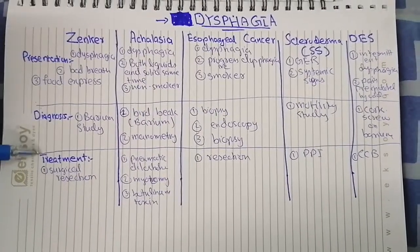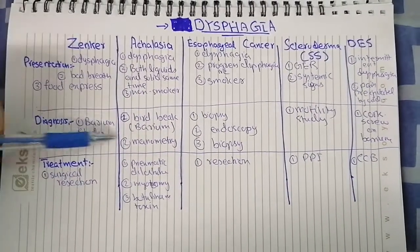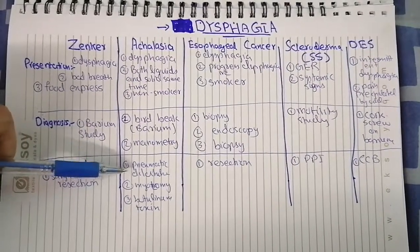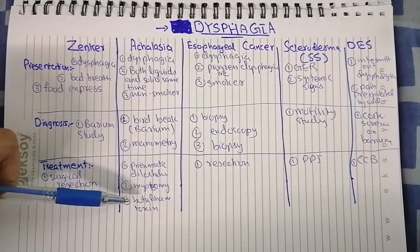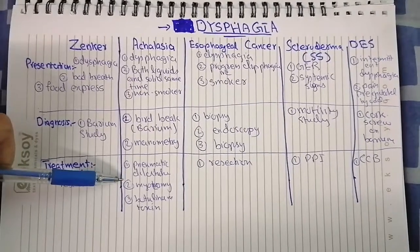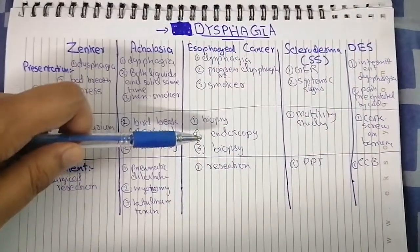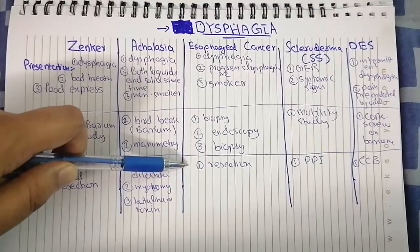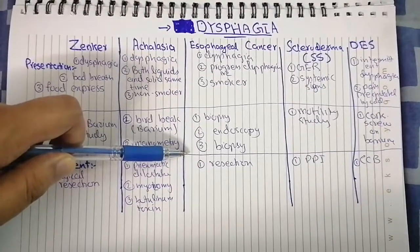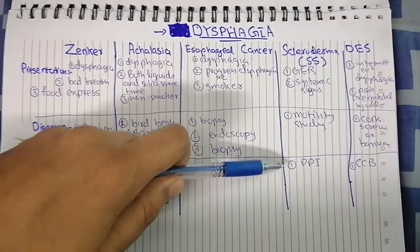Now for treatment: for Zenker's, the posterior pouch must be resected. For achalasia, we do pneumatic dilation, myotomy, or injection of botulinum toxin — but myotomy is the best option. For esophageal cancer, we always do resection if it is in an early stage; if it is non-resectable, then we do palliative treatment.